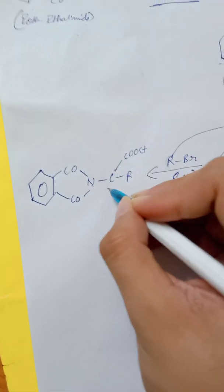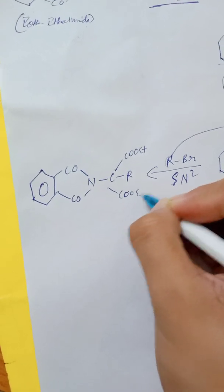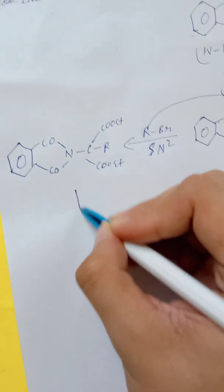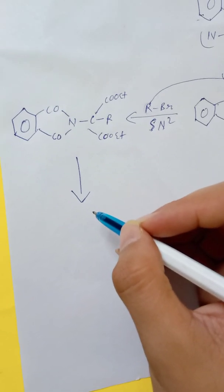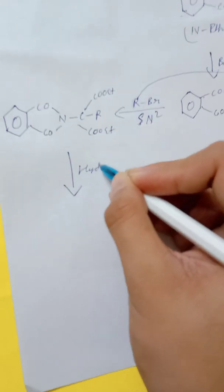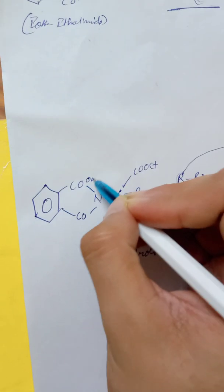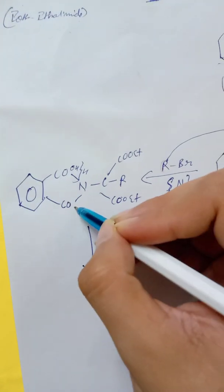So CR and COOC2H5 will remain the same. Now what we will be doing is hydrolysis.